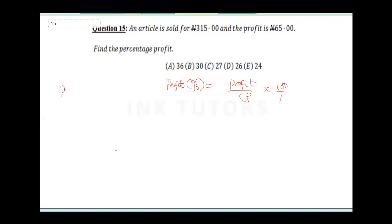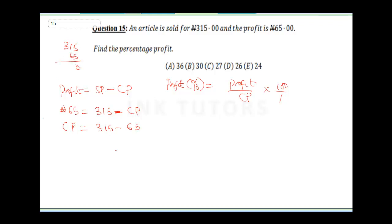Profit = selling price − cost price. So 65 = 315 − CP. Rearranging: CP = 315 − 65. Calculating: 315 − 65 = 250. So our cost price is 250 naira.